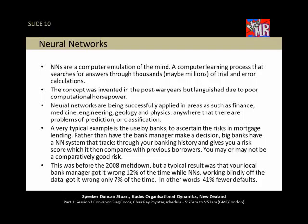A neural network would take all your back data — your credit history, income, and a number of variables — and based on its collective wisdom built up from bank records over the last few years and millions of calculations, it says: Ray, you are a good risk, we'll lend the money. I've got to put a caveat on that — this is before the 2008 meltdown when almost everybody's mortgage melted down. But prior to that, bank managers got it wrong 12% of the time. Neural networks get it wrong 7% of the time — 41% fewer defaults. When you're a huge bank lending out billions of dollars, that difference makes a big difference.